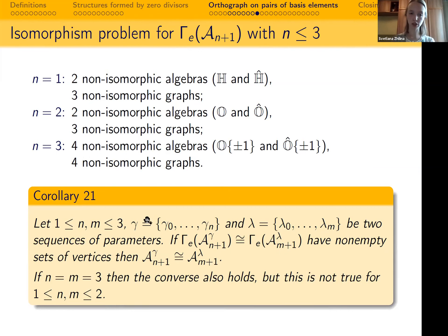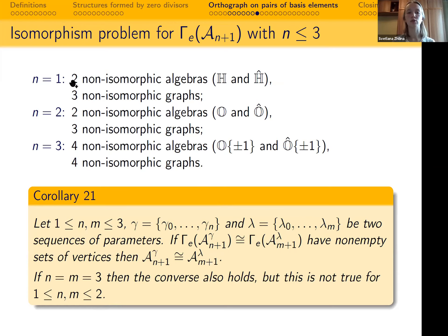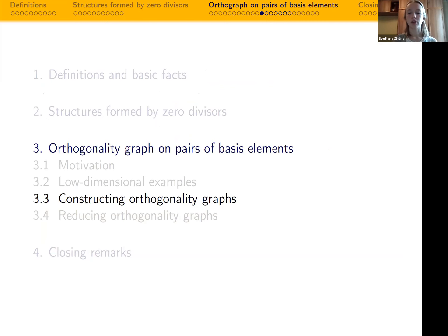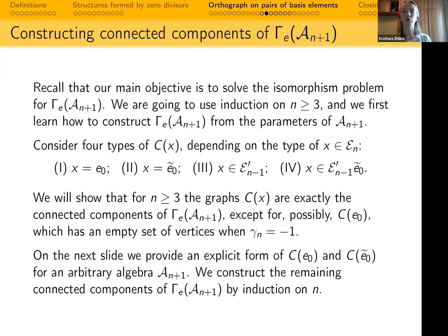To summarize the low-dimensional cases: for n = 1 there are 2 non-isomorphic algebras and 3 non-isomorphic graphs; for n = 2, also 2 algebras and 3 graphs; for n = 3, there are 4 algebras and 4 graphs. By our complete classification, we obtain the following corollary: if n and m are between 1 and 3, and the graphs of two algebras with nonempty vertex sets are isomorphic, then the corresponding algebras are isomorphic. For n = m = 3 this holds fully with a bijection between 4 algebras and 4 graphs. However, for n and m between 1 and 2 the implication from isomorphic graphs to isomorphic algebras can fail, since there are more graphs than algebras. We have also proved the result for n = 3, and will now use induction on n ≥ 3.